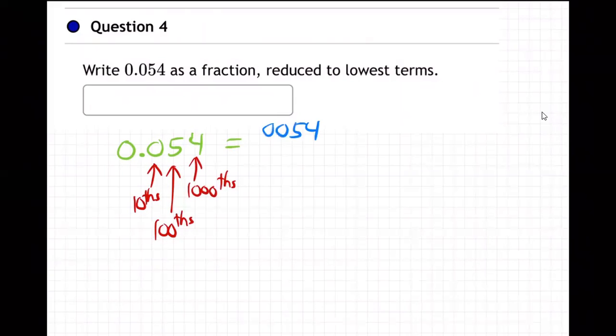That doesn't... if you wrote zero, zero, that doesn't really do anything. It's still just 54. Over... over what? A thousand. So you put it over the name of the last place. It's 54 thousandths because of where it ends. It ends in the tenths, hundredths, thousandths place.